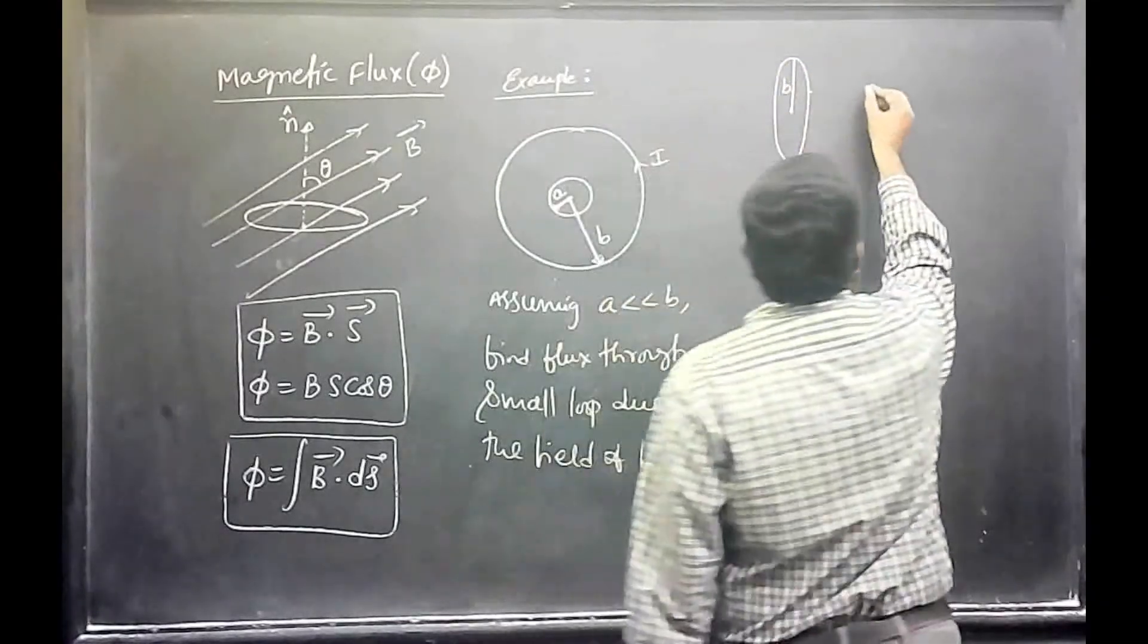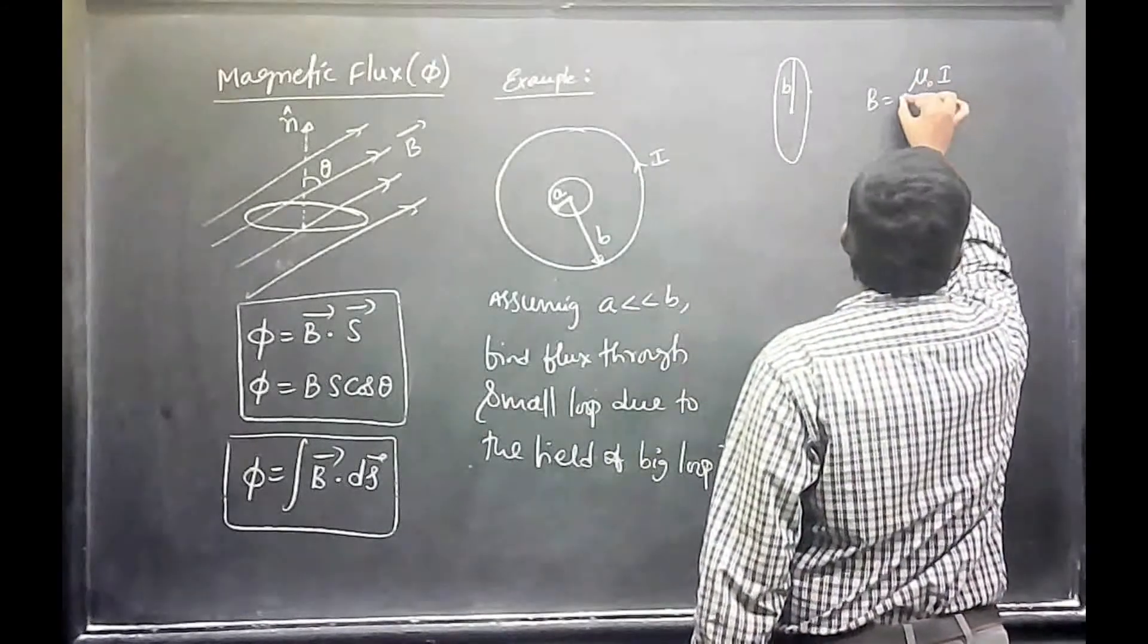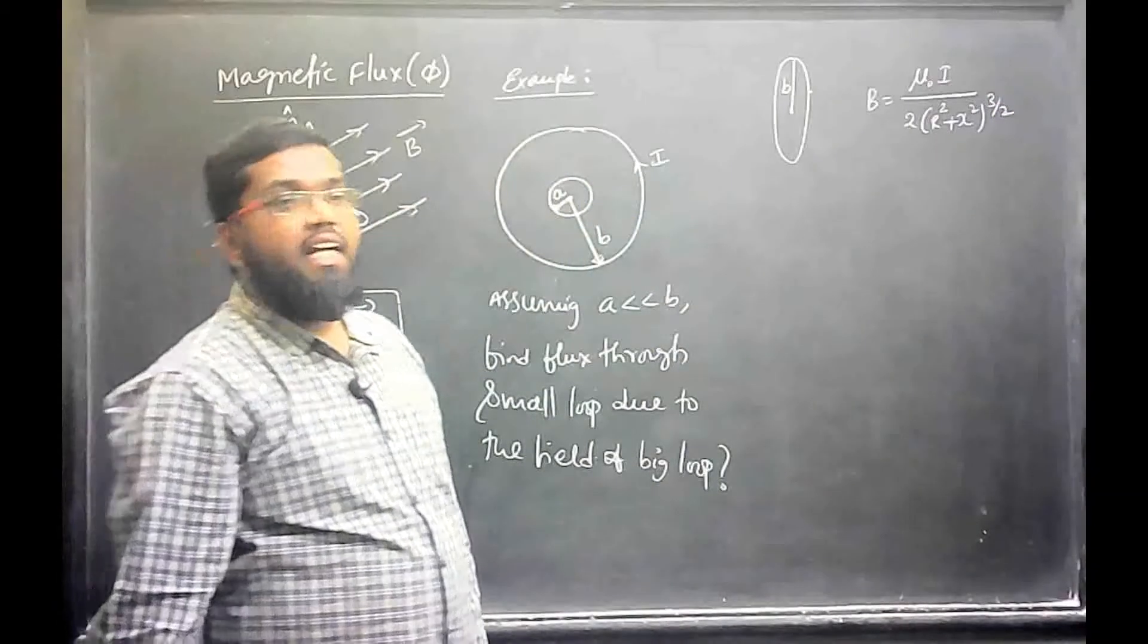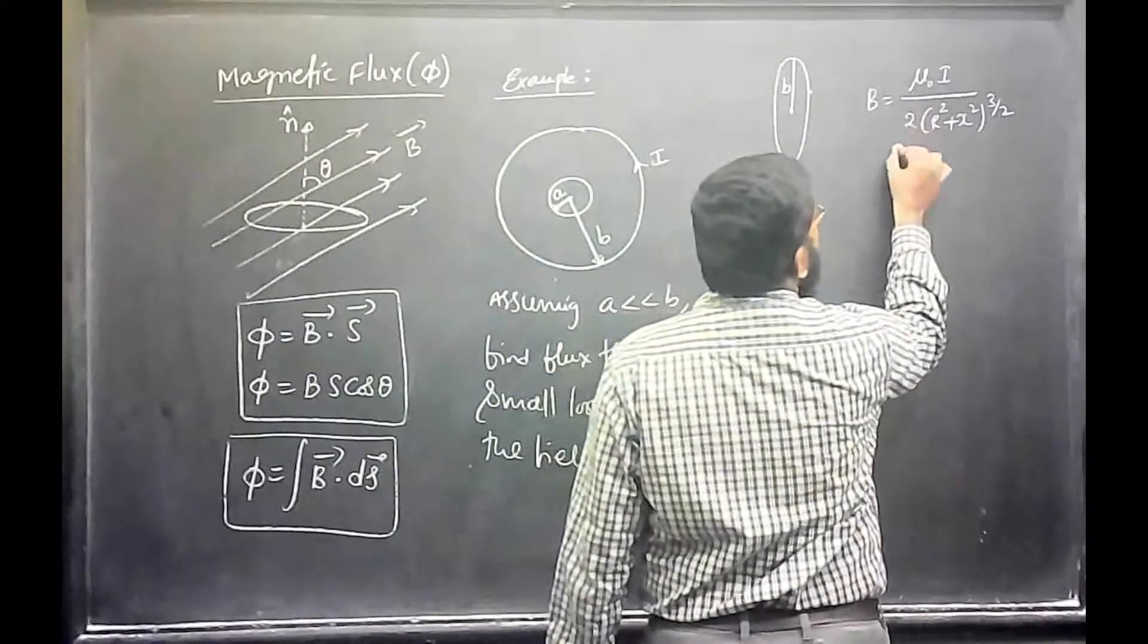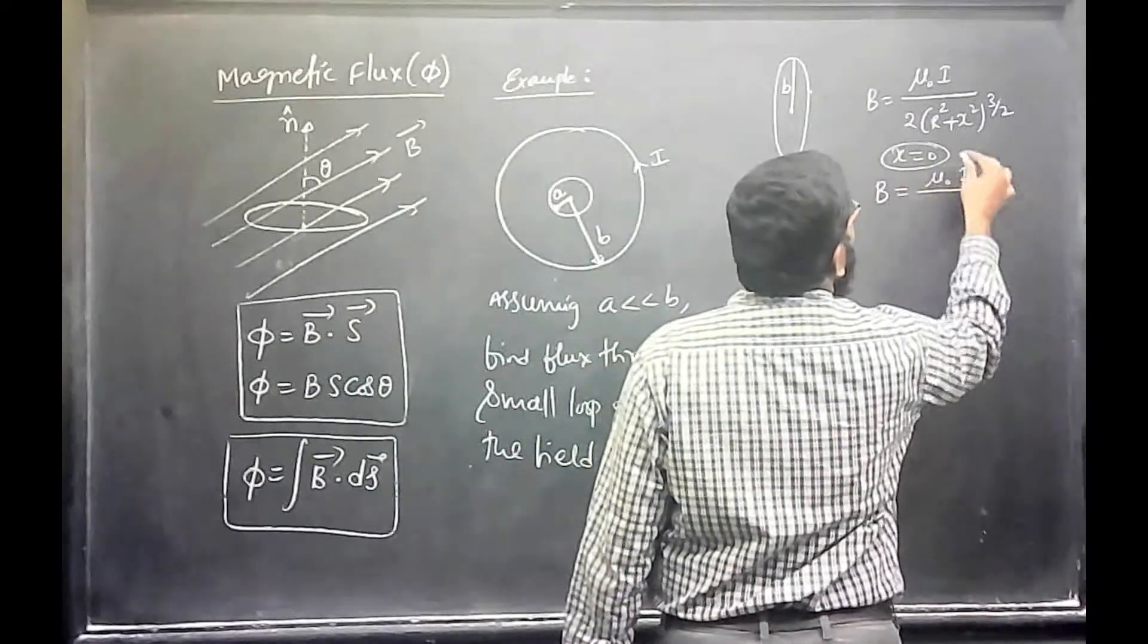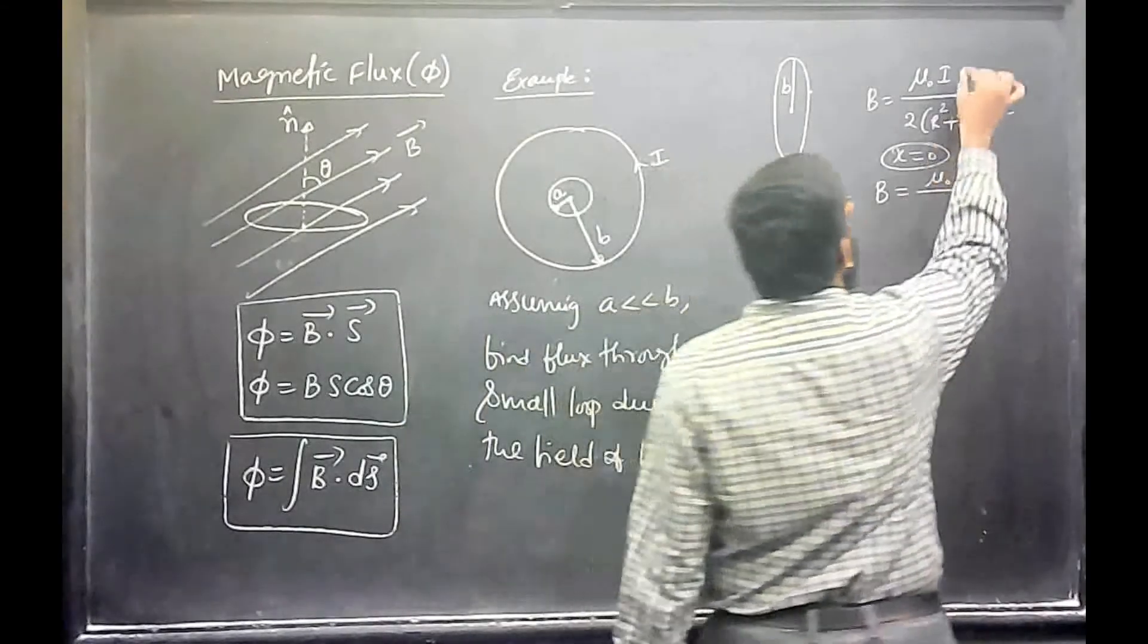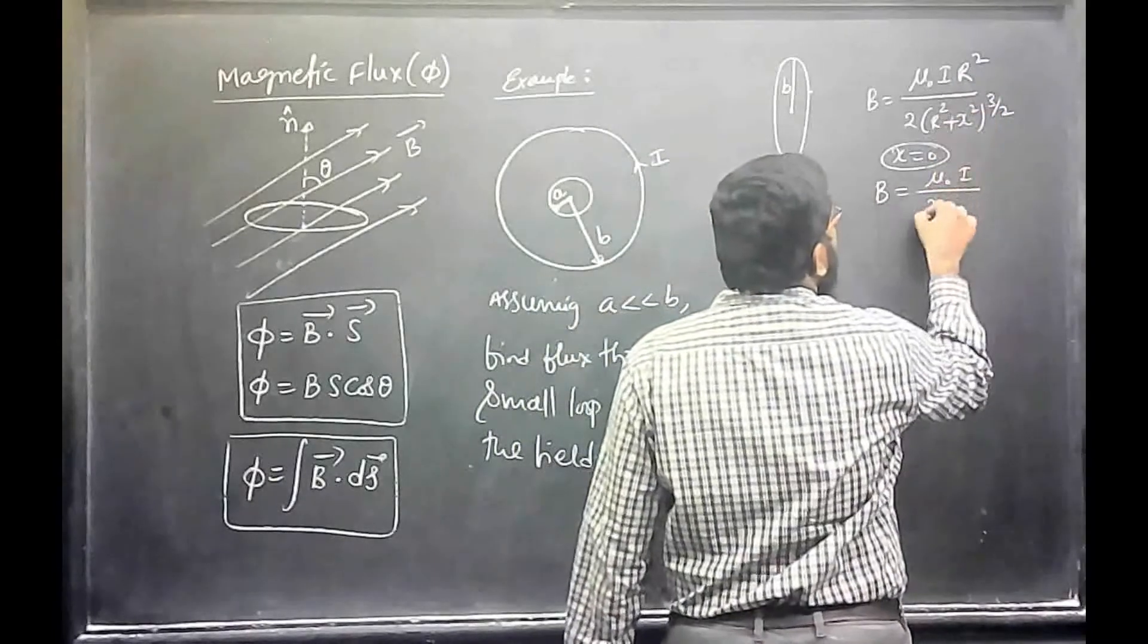Near the centre, what is the formula for magnetic field? Mu naught I by 2 into R square plus x square whole power 3 by 2. At the centre, x is equal to 0. So, approximately mu naught I divided by 2R. R cube cancels to give 2R.